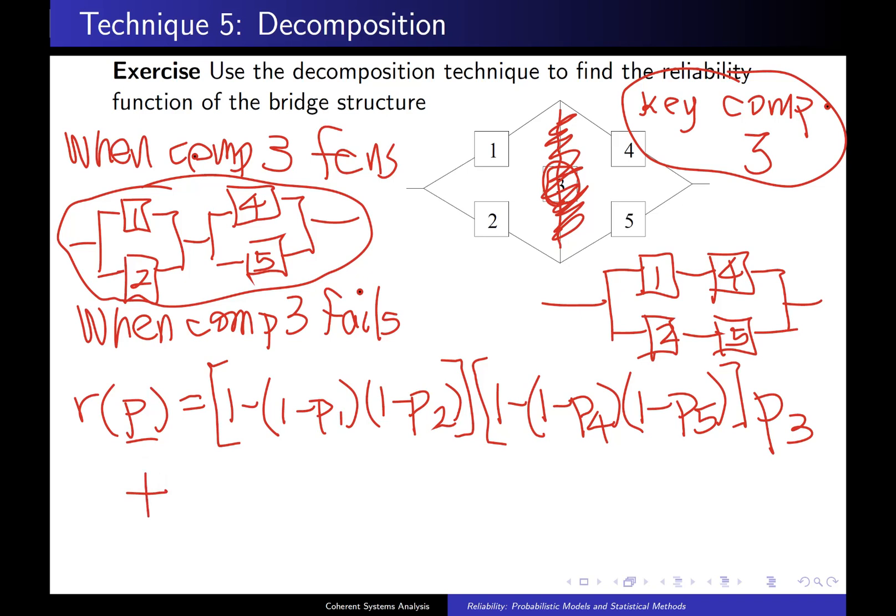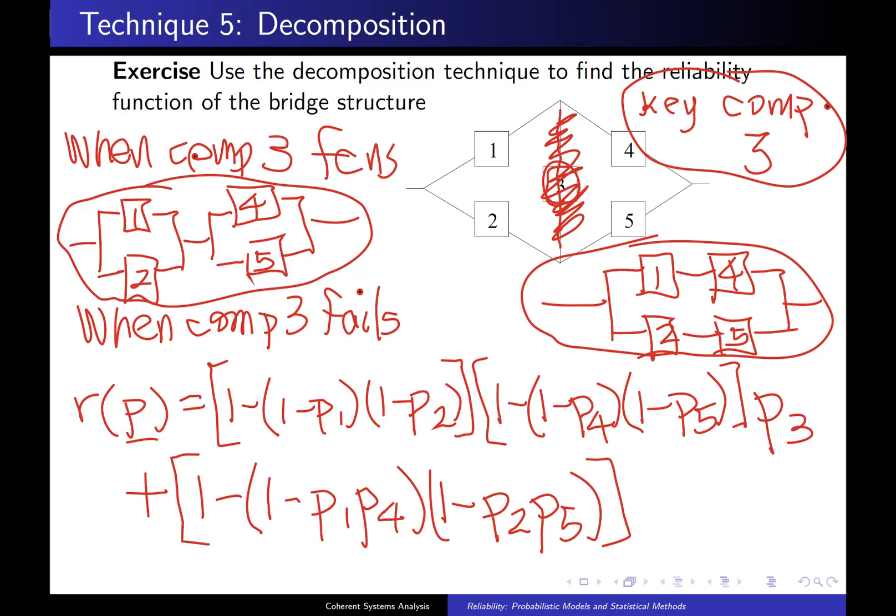Now, what we want to do is we want to write down the reliability function for this system. And what does that look like? That looks like 1 minus [1 - p_1*p_4], because component 1 and component 4 are in series, and [1 - p_2*p_5], because component 2 and component 5 are a series subsystem. So, there in the brackets, that is the reliability function for our system, which applies when component 3 fails, and this gets multiplied by the probability of component 3 failing, which is 1 minus p_3.